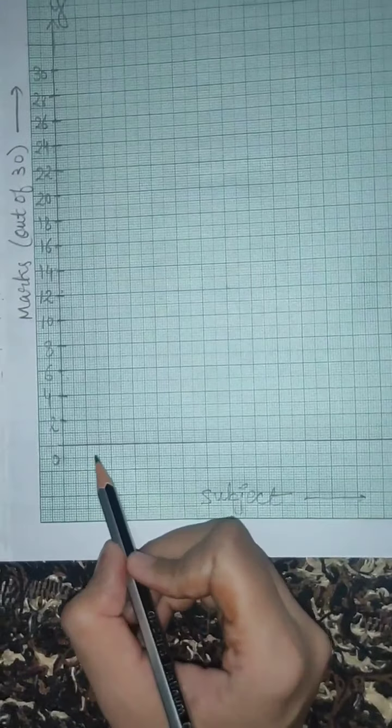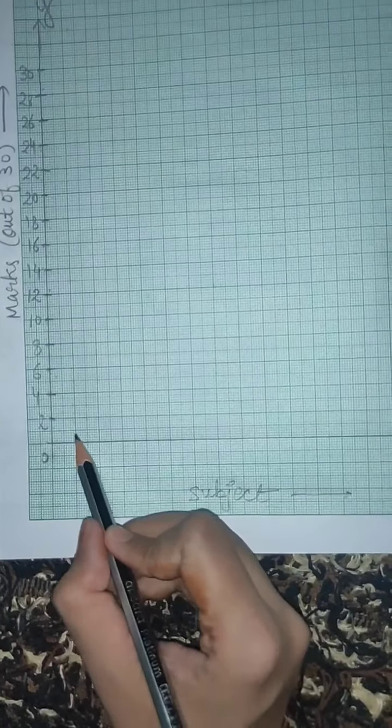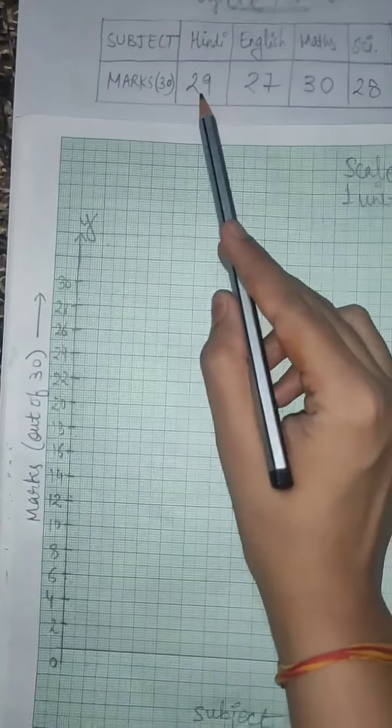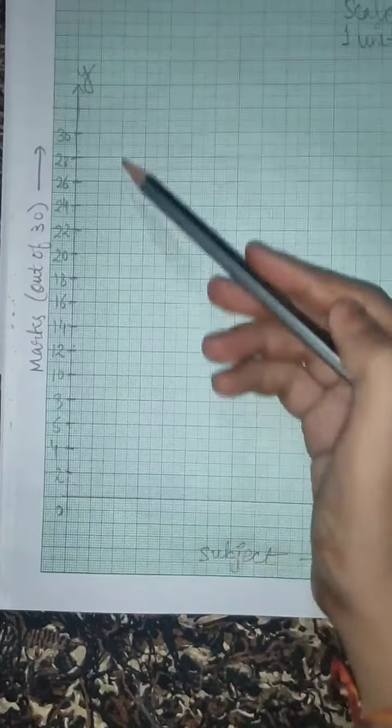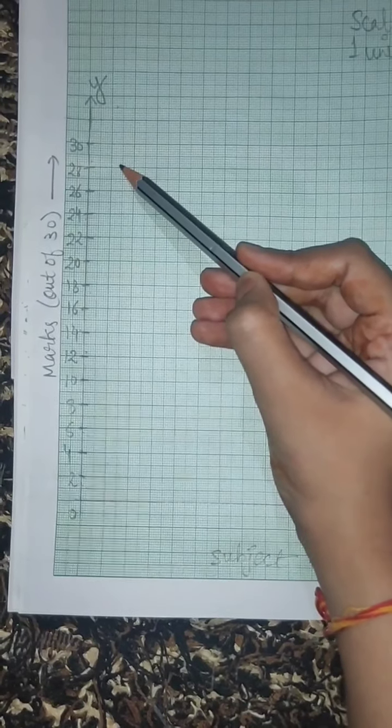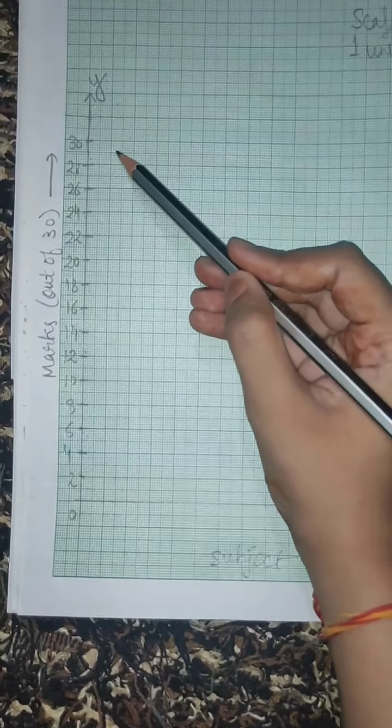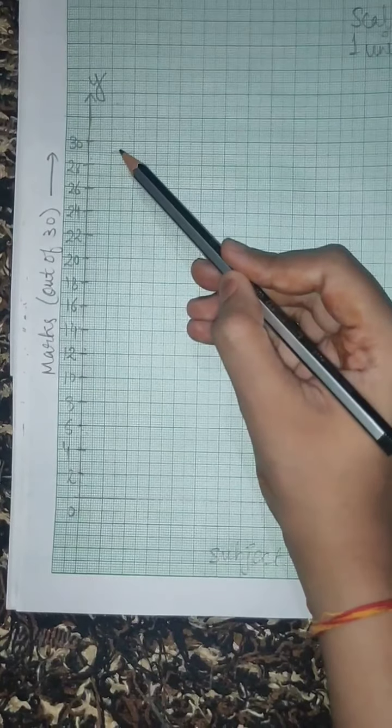First of all, there is Hindi subject. So obviously I have written subject here. Here we will write Hindi and we will make Hindi bar. When we take scale of 2, where do we go? This is 28, so obviously this is 30. So it will be 29 in the center. So this means we will go here.